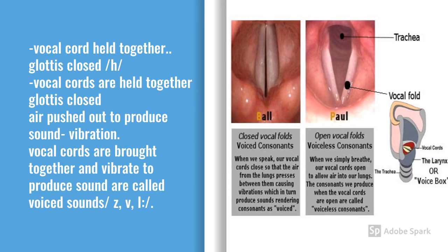Some sounds are produced when the vocal cords are held together — this position is known as the glottis closed. The air from the lungs is pushed out to produce sounds, causing vibration. When the vocal cords are brought together and vibrate to produce sounds, they are called voiced sounds. Sounds may be voiced or voiceless.